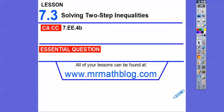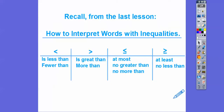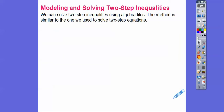Here we are finally solving two-step inequalities. In the last lesson we wrote inequalities, and our common core strand is the same. Here, how do we write a two-step inequality? Remember from the last lesson: fewer than or less than uses the less-than symbol; greater than or more than uses the greater-than symbol; at most, no greater than, or no more than means less than or equal; and at least or no less than means greater than or equal to.